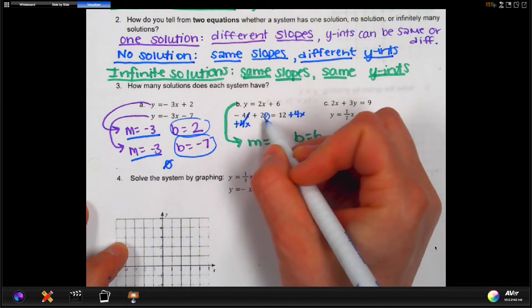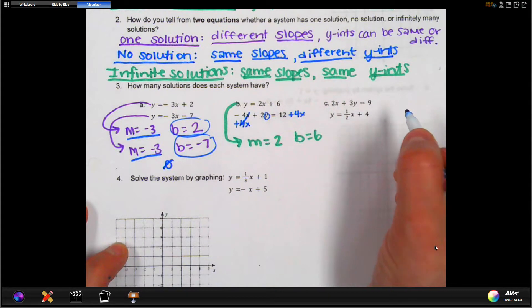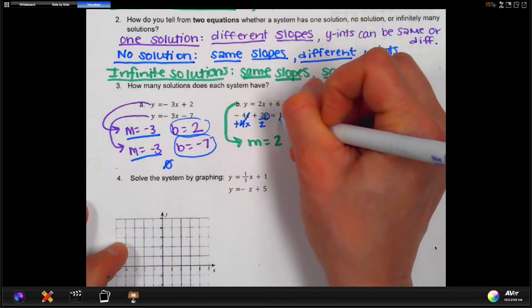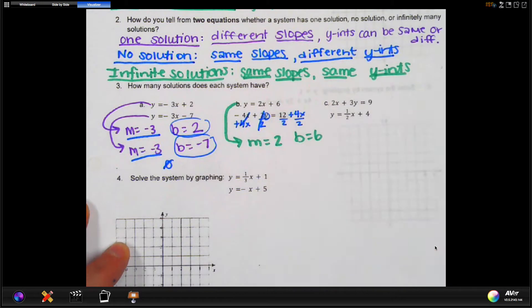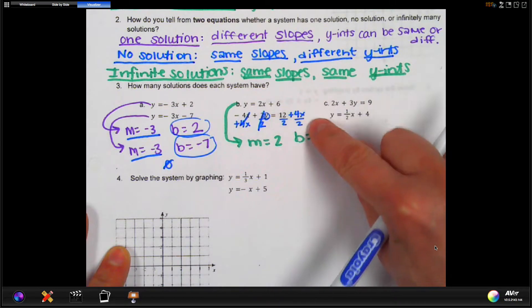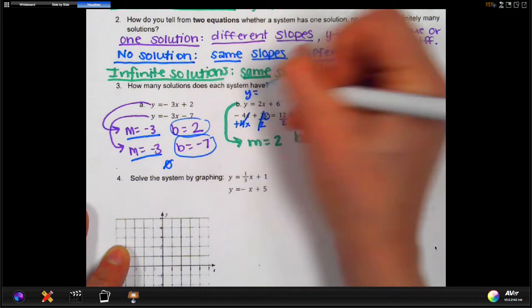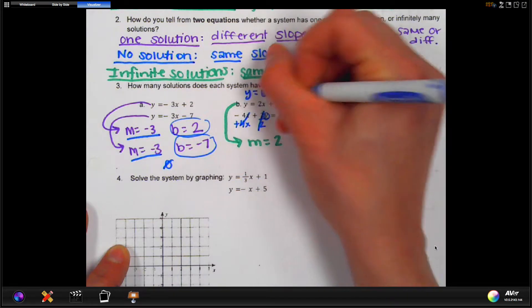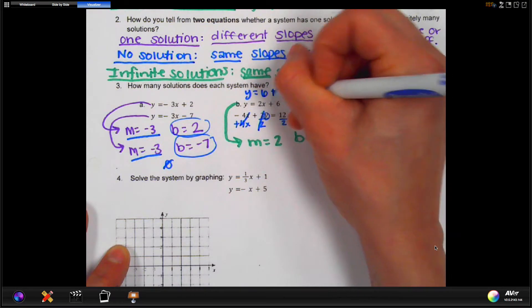And then I also have to get rid of this 2 since it's right next to the y. That means it's multiplying. So to undo that, I will divide by 2, divide this by 2, and divide this by 2. Now, there's not a lot of space here, so I'm going to rewrite the second equation above. So to rewrite it, I end up with y equals 12 divided by 2 is 6. And positive 4x divided by 2 is positive 2x.